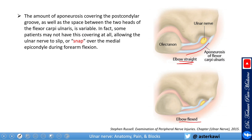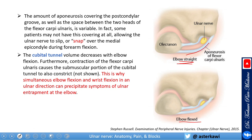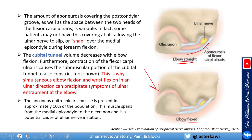Some patients may not have this covering at all, allowing the ulnar nerve to slip or snap over the medial epicondyle during forearm flexion. The cubital tunnel volume decreases with elbow flexion, and contraction of the flexor carpi ulnaris also causes the submuscular portion of the cubital tunnel to constrict. This is why simultaneous elbow flexion and wrist flexion in an ulnar direction can precipitate symptoms of ulnar entrapment at the elbow. In about 10% of people, there is a muscle spanning from the medial epicondyle to the olecranon that is a potential cause of ulnar nerve irritation.